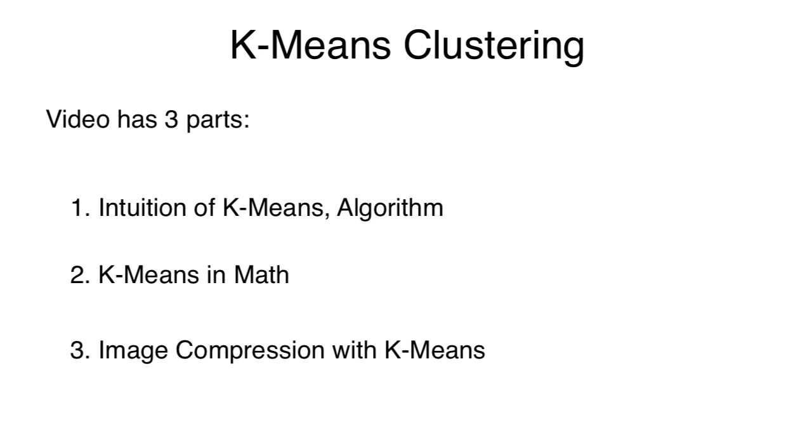This video is going to be divided into three parts. First is a high-level intuition on what k-means is, what it does, and the algorithm. Next, we're going to represent it in math notation. And finally, use this notation to code an image compressor. I'm AJ Halthor, and let's just jump into the big picture.